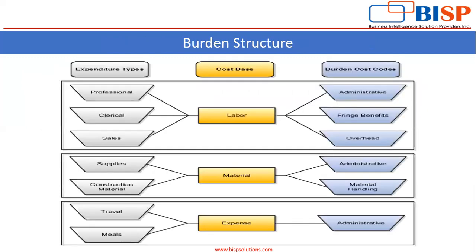This is the burden structure format. The cost base shown here is labor. The burden cost codes related to labor are administrative, fringe benefits, and overheads. For the expenditure types related to labor, you can see professional, clerical, and sales. In the same way, we can see the setup for material and expense.